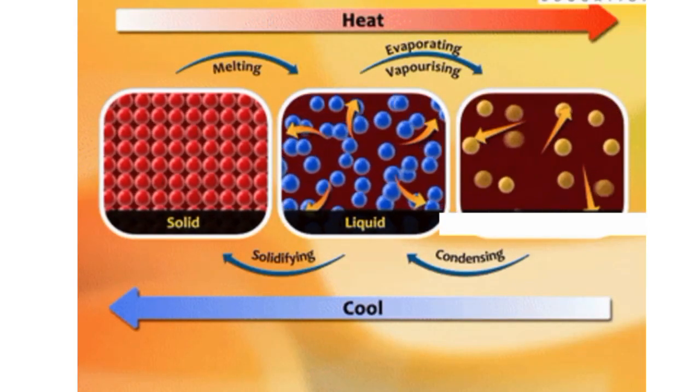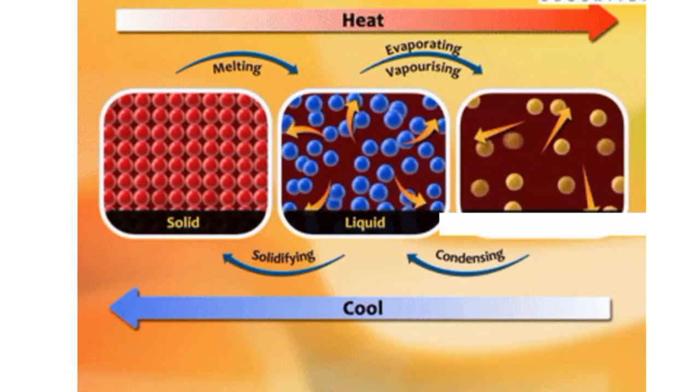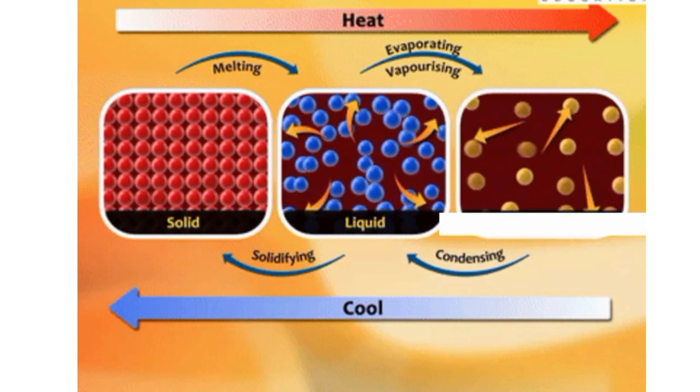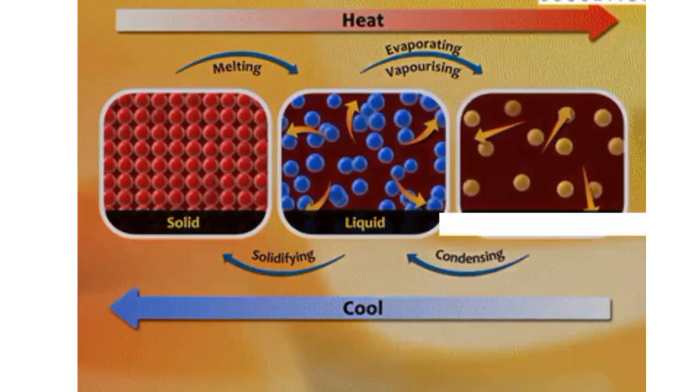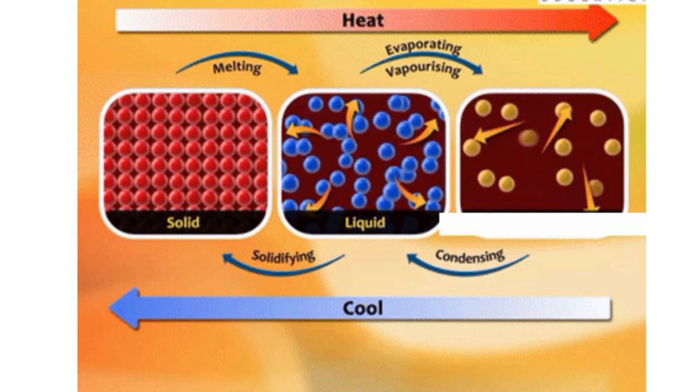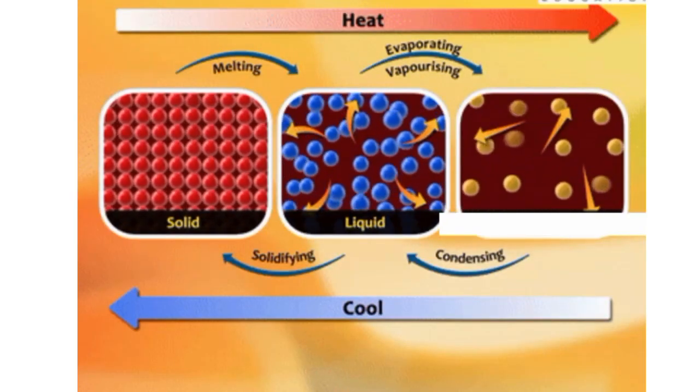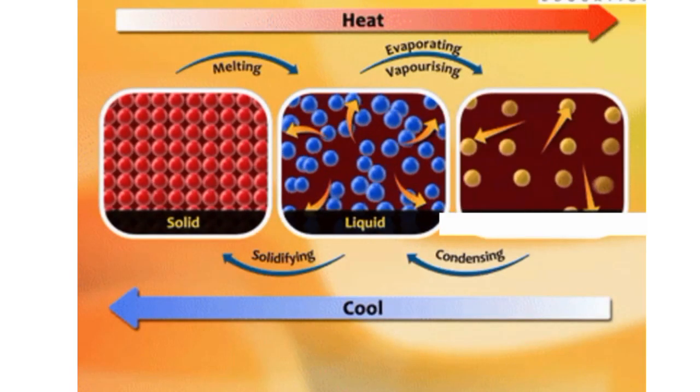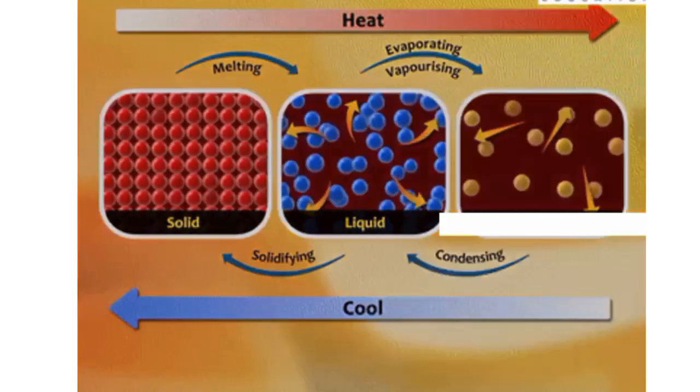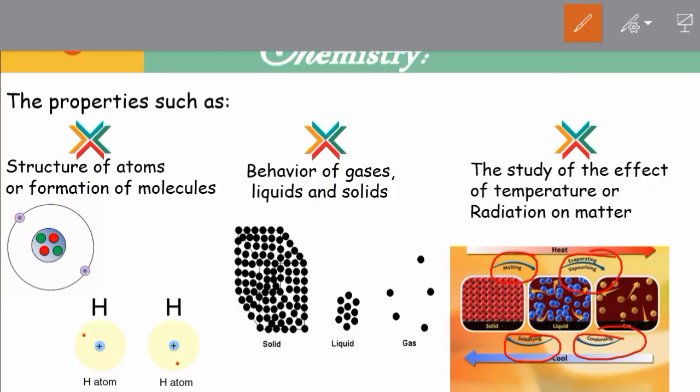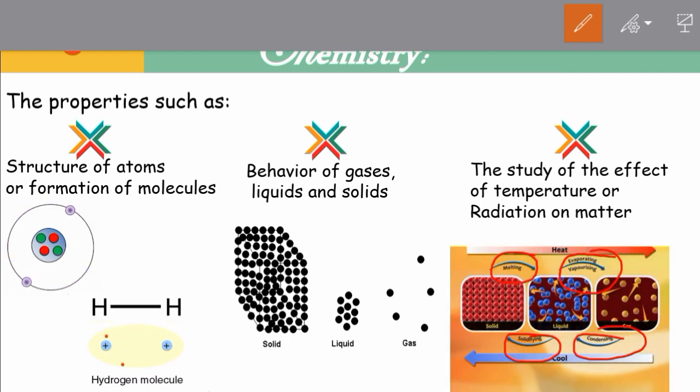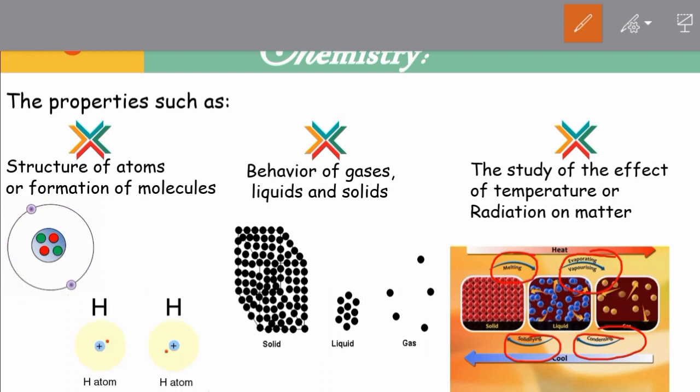When liquids are further heated, they evaporate or boil and convert into gas, meaning their state changes. When we cool gas, it changes to liquid and this process is called condensation. And when liquid is further cooled it converts into solid and this process is called freezing. We can see what effect temperature has on different states of matter. These all properties are discussed in the branch of chemistry known as physical chemistry.